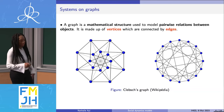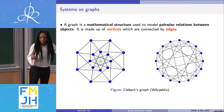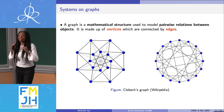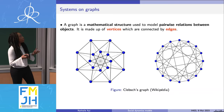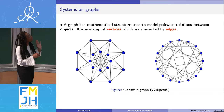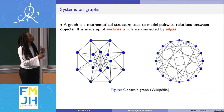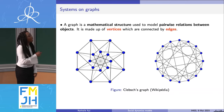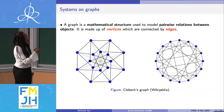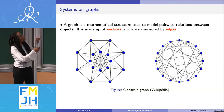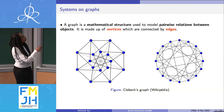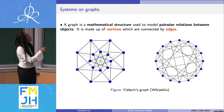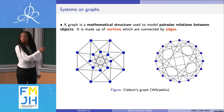Now I'll talk about systems on graphs. I'm not a specialist of graph theory — I'm talking about them because this is the structure that naturally appears when you're interested in this type of system. A graph is a mathematical structure you can use to model pairwise relations between objects. You have two important notions: the vertices (or nodes, the blue circles), and the edges (the straight lines that connect or do not connect some vertices). For instance, here you have a connection between two vertices but not between two others.